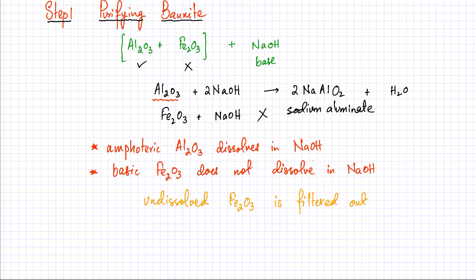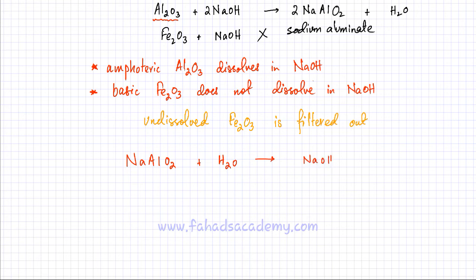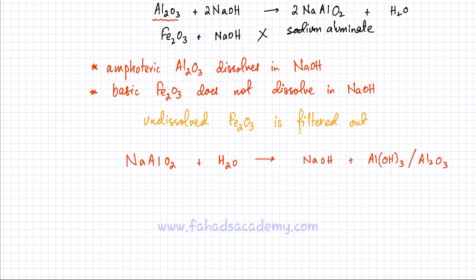The resulting solution contains pure sodium aluminate in NaOH. More water is then added, and alumina is precipitated out, giving NaOH in solution and aluminium hydroxide or aluminium oxide, Al2O3, as a precipitate. This precipitate is filtered out and gives you pure alumina, which is used for electrolysis in the next step.